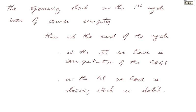The opening stock of the first cycle was, of course, empty. At the end of the cycle, in the IS, we have a computation of the COGS that you should be familiar with: the sales, the opening stock which is empty — that is zero — purchases, and the closing stocks in credit, closing stocks IS. And in the balance sheet, we have a closing stock in debit. You have to go back to adjustments for stocks if you are not at ease with that.